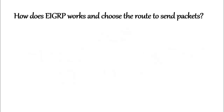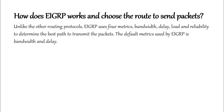Now let's find out how EIGRP works and how it chooses the route to send the packets. Unlike other routing protocols, EIGRP uses four metrics — bandwidth, delay, load, and reliability — to determine the best path to transmit the packets. The default metrics used by EIGRP are bandwidth and delay.